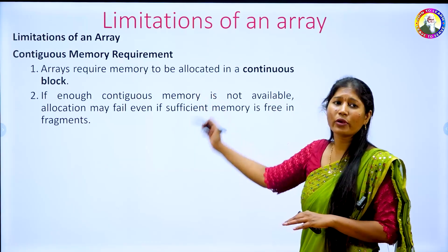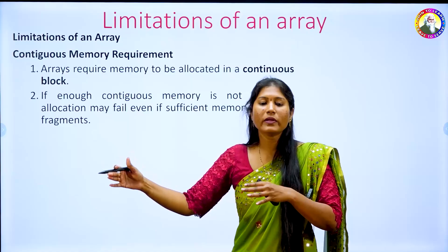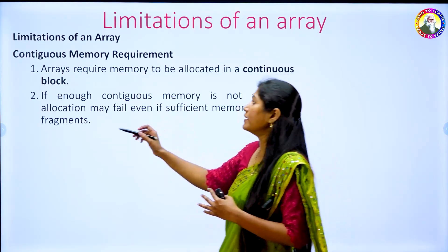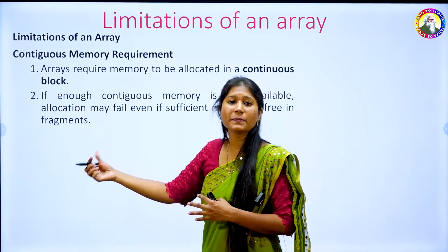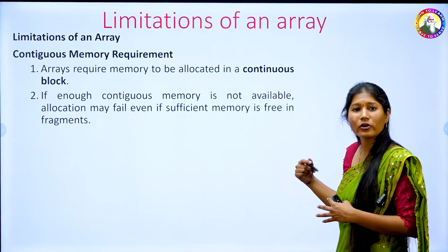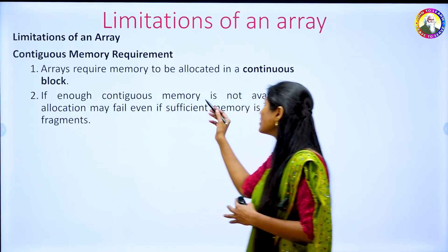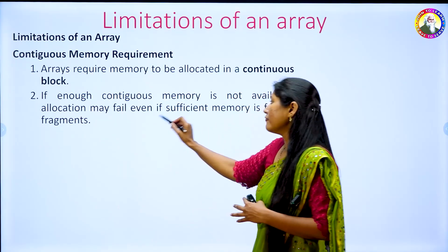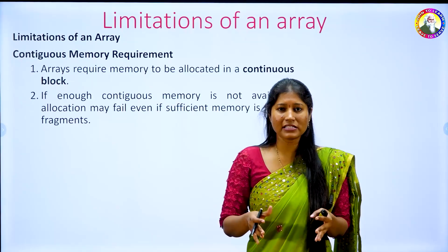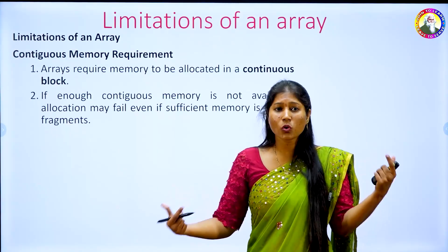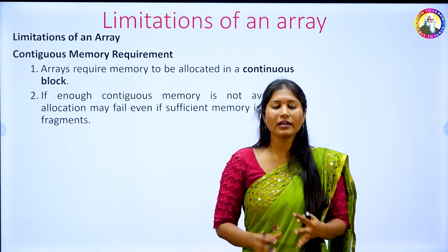The second limitation is contiguous memory requirement. The memory must be allocated continuously with no gap between elements. If array requires memory in a continuous block, I cannot store the first 5 elements in one space and the other 5 in another. For a[10], I need to start from index 0 to 9. Even if enough contiguous memory is not available, allocation may fail — even if sufficient memory is free in fragments. For example, if I require 80 bytes but 40 bytes are in one block and another 40 in a different block, I still cannot allocate it to the array, because an array requires contiguous memory.